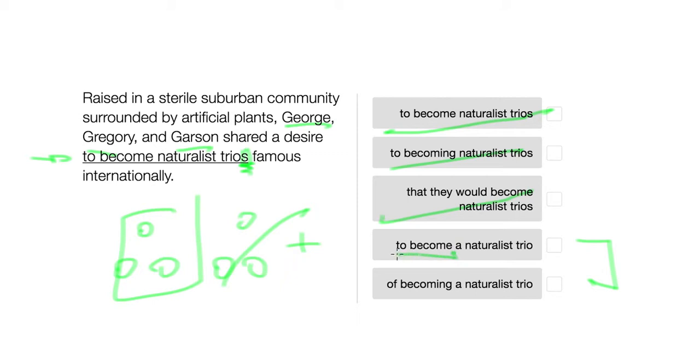Again, just intuitively, to become is slightly more simple than of becoming, and we're looking for the most simple form. Let's go ahead and see why this version is better than the latter. Raised in a sterile suburban community surrounded by artificial plants, George, Gregory, and Garson shared a desire of becoming a naturalist trio.